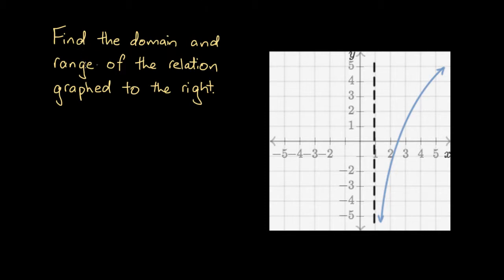Find the domain and range of the relation graphed to the right. This relation is represented by this blue curve. This blue curve has an arrow at one end and another arrow at the other end. And we have this black dotted line, which represents an asymptote.